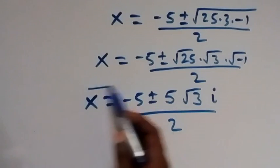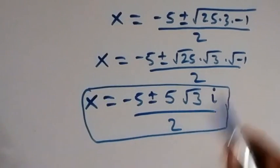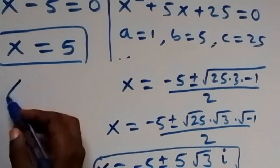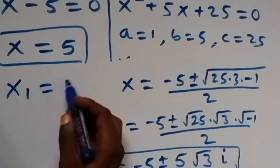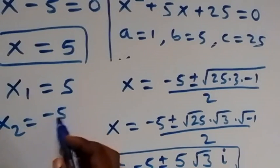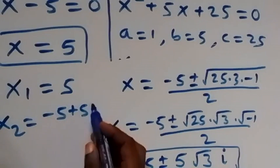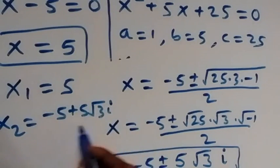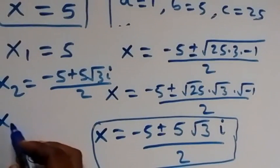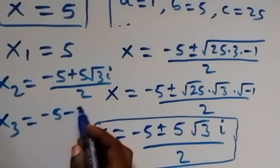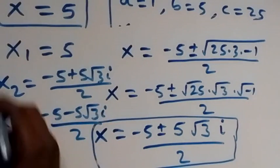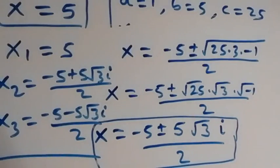So we have two complex solutions. All together we have three solutions: x1 equals 5, x2 equals minus 5 plus 5 root 3i over 2, and x3 equals minus 5 minus 5 root 3i over 2.